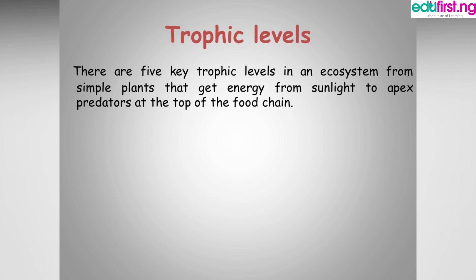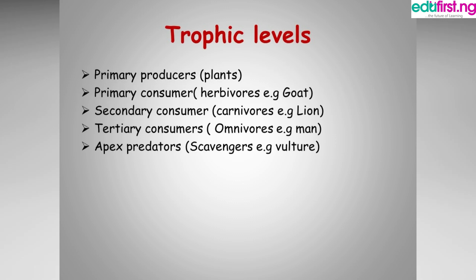We have the trophic levels, and there are five key trophic levels in an ecosystem — from simple plants to the apex predators of a food chain. These trophic levels are a medium for energy transfer in an ecosystem. The first is the primary producers — they are the plants, the producers in any ecosystem.